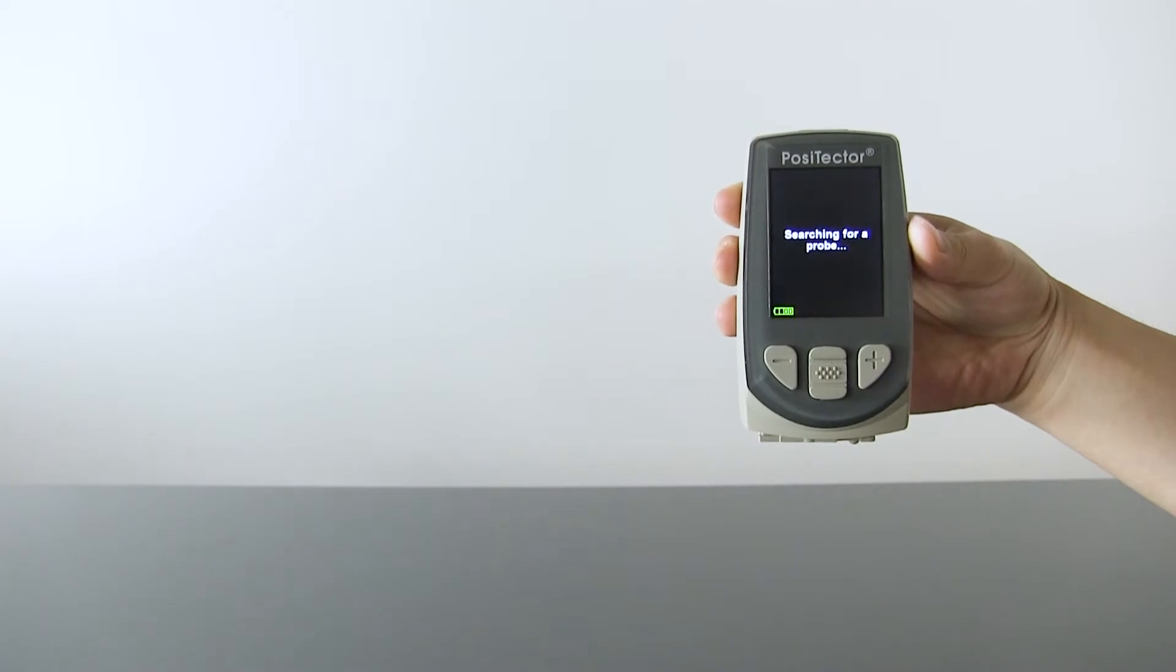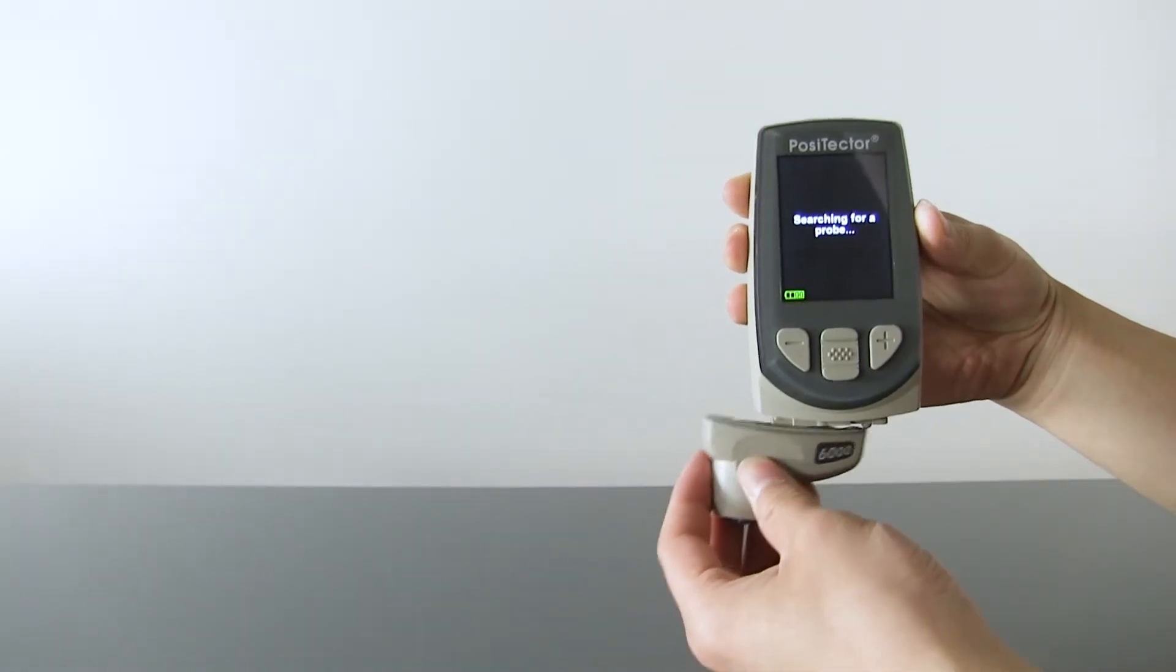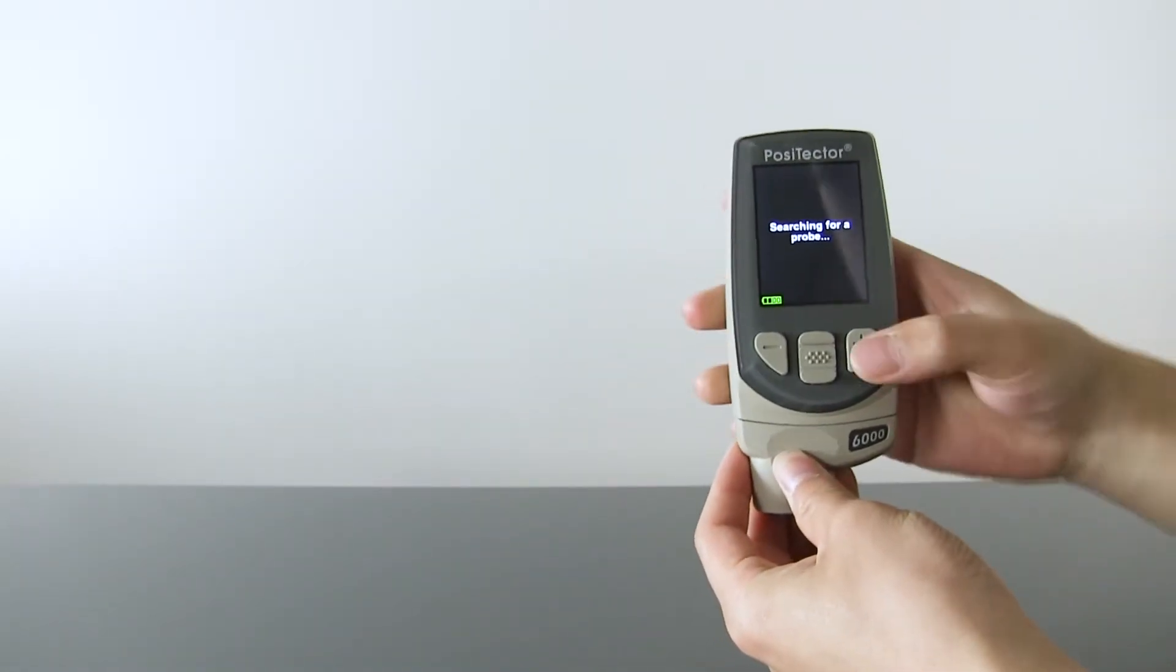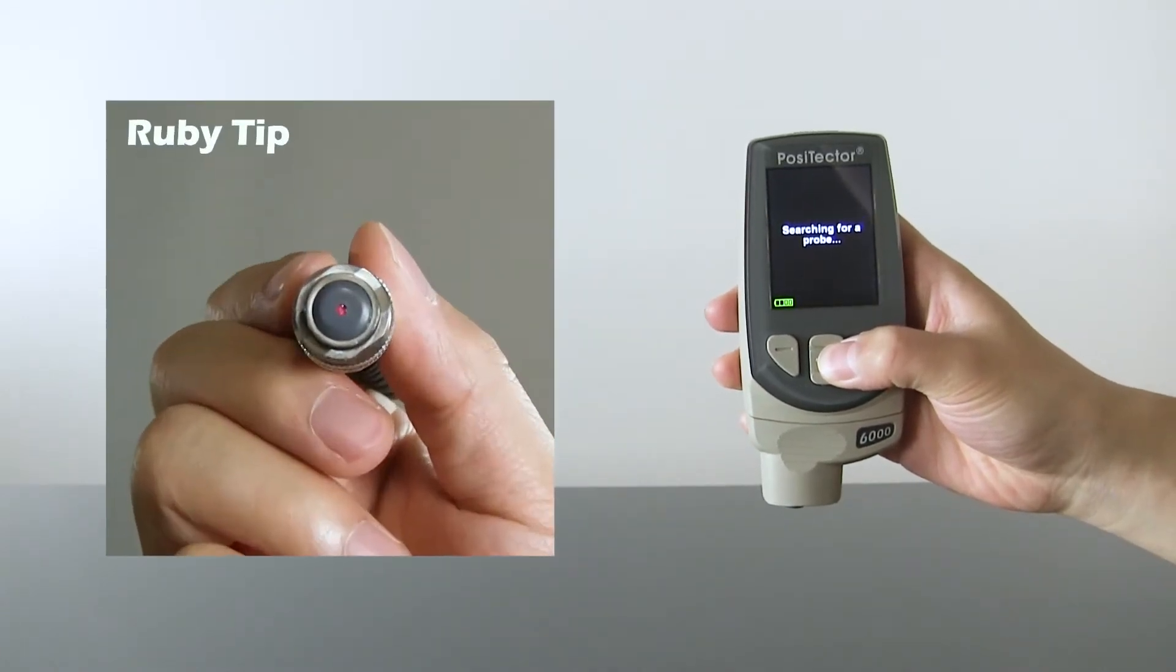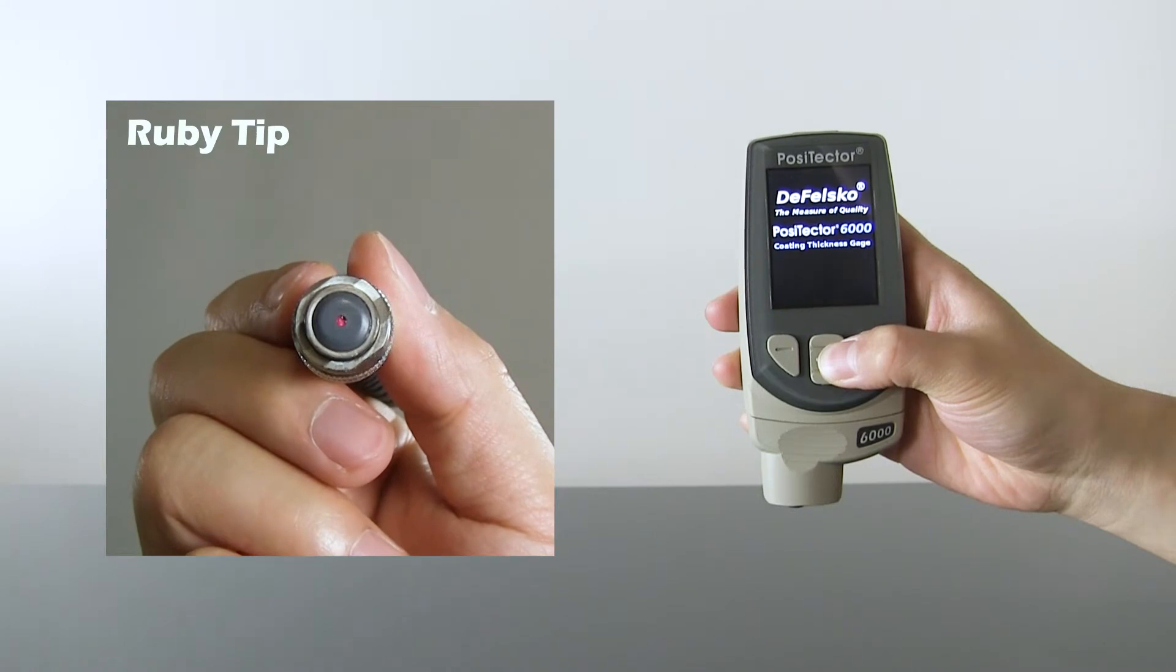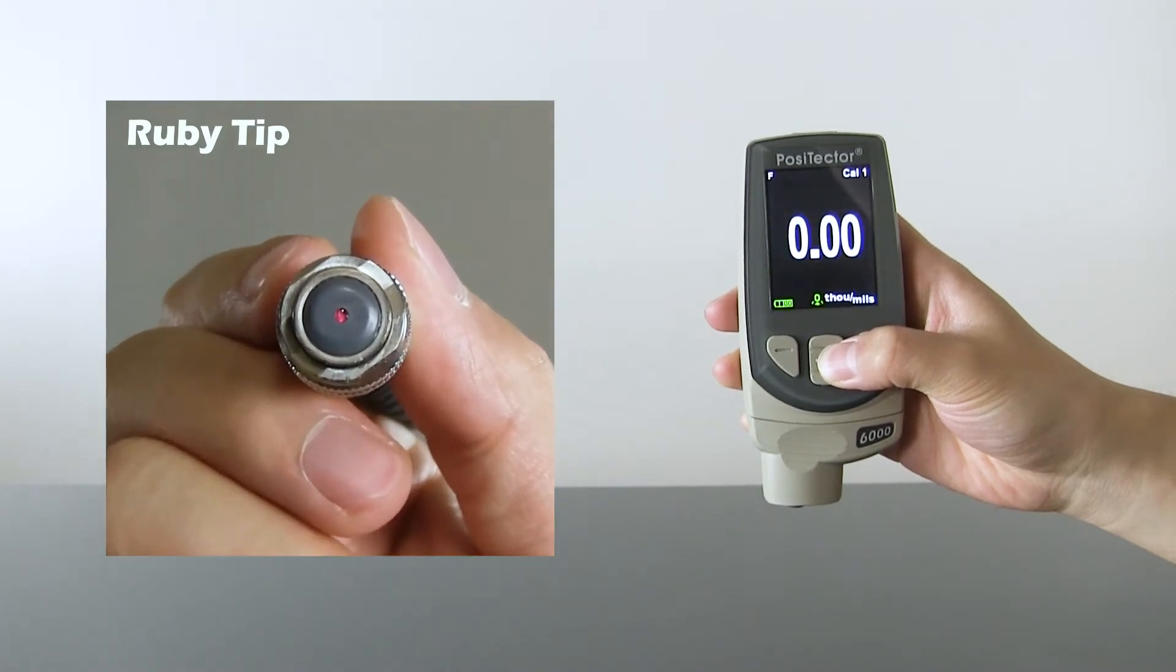All Positector 6000 probes are capable of scanning when attached to an advanced gauge body without the need for wear tips or repetitive zeroing. Durable ruby-tipped probes on our most popular probe models prevent wear and maintain the factory calibration.